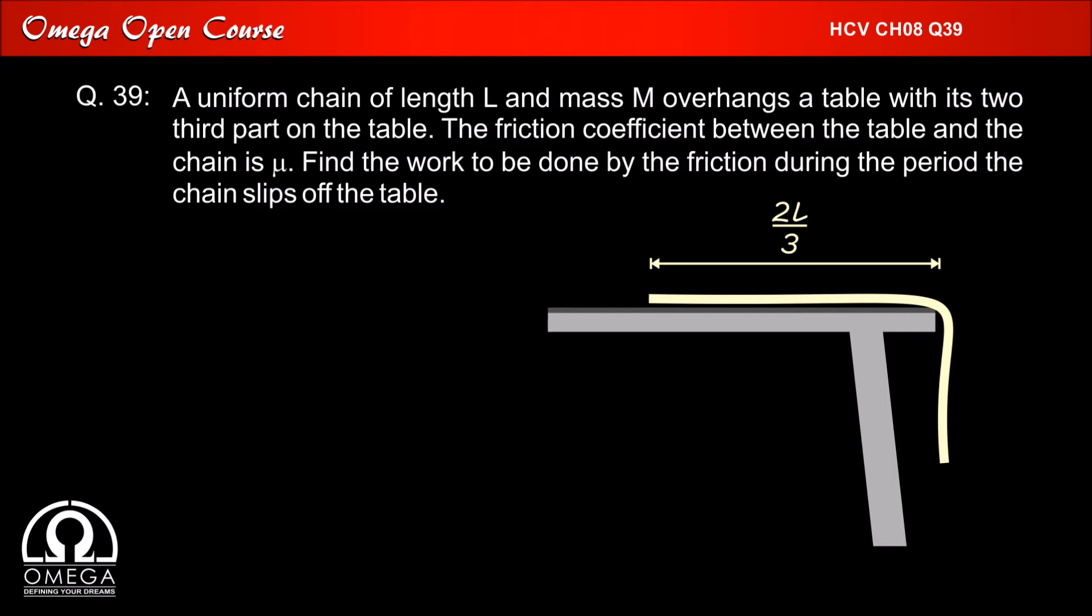A uniform chain of length L and mass M overhangs a horizontal table with its two-third part on the table. The friction coefficient between the table and the chain is mu. Find the work done by friction during the period the chain slips off the table.